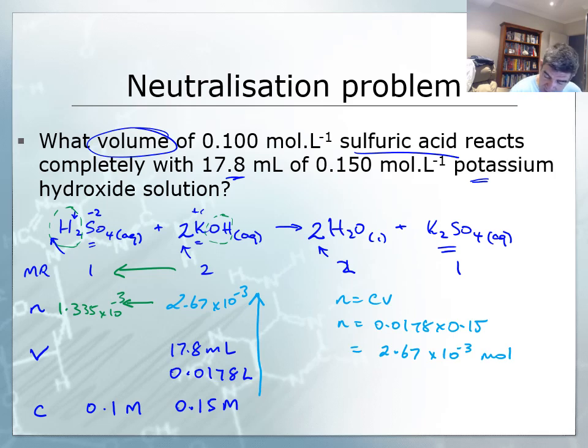Now I need the volume. I know that N equals CV, so V equals N over C. The number of moles is 1.335 times 10 to the minus 3, divided by 0.1, which gives 1.33 times 10 to the minus 2 litres. Multiplying by 1000 to get mL, I need 13.3 mL of sulfuric acid to fully neutralize the potassium hydroxide.